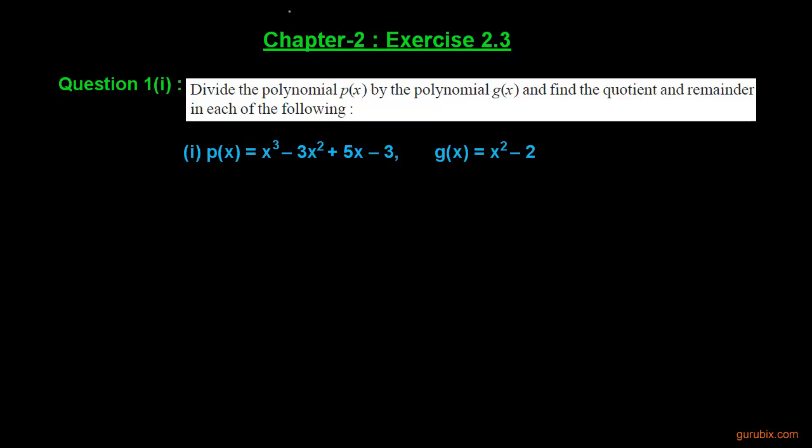Welcome friends. Here is the first part of question number one of exercise 2.3 of chapter 2. The question says: divide the polynomial p(x) by the polynomial g(x) and find the quotient and the remainder in each of the following. Here is the first part of question number one, so let us see how to do it.